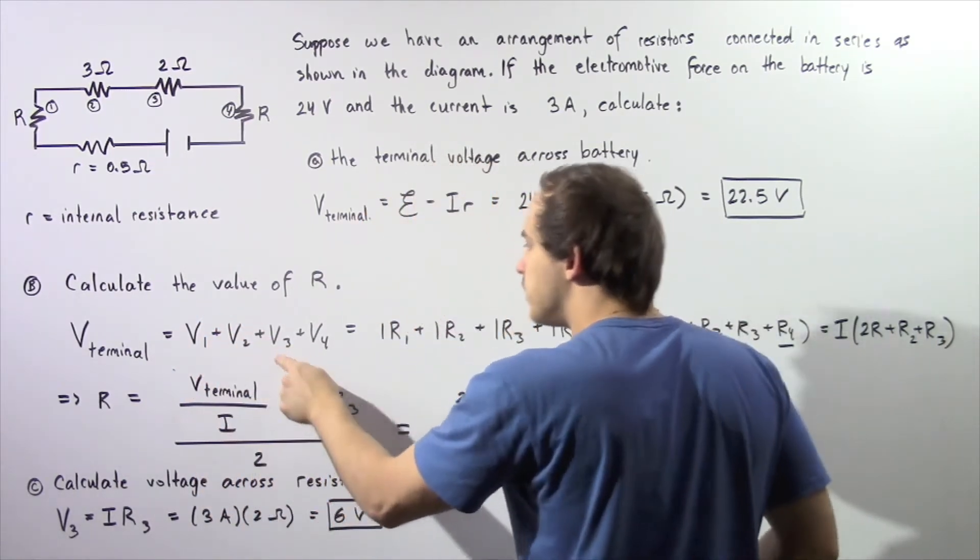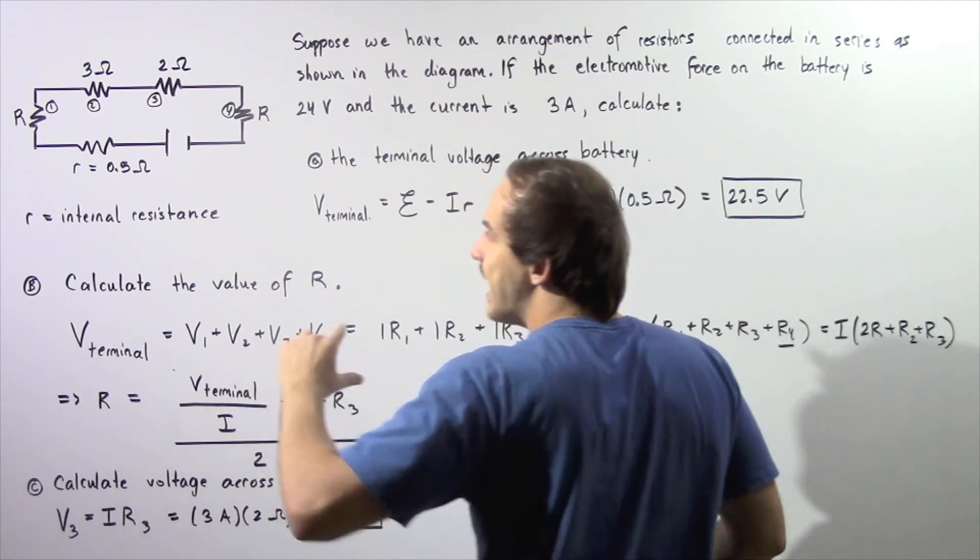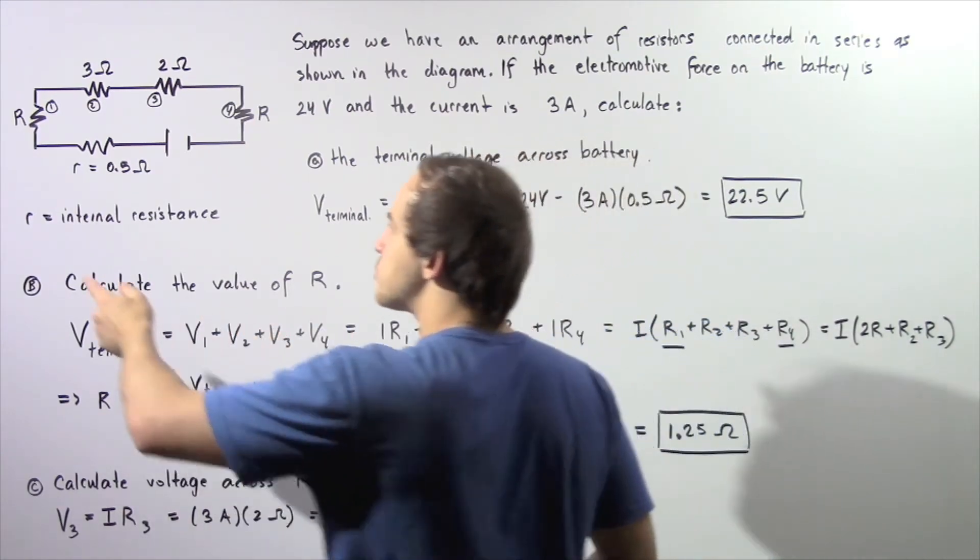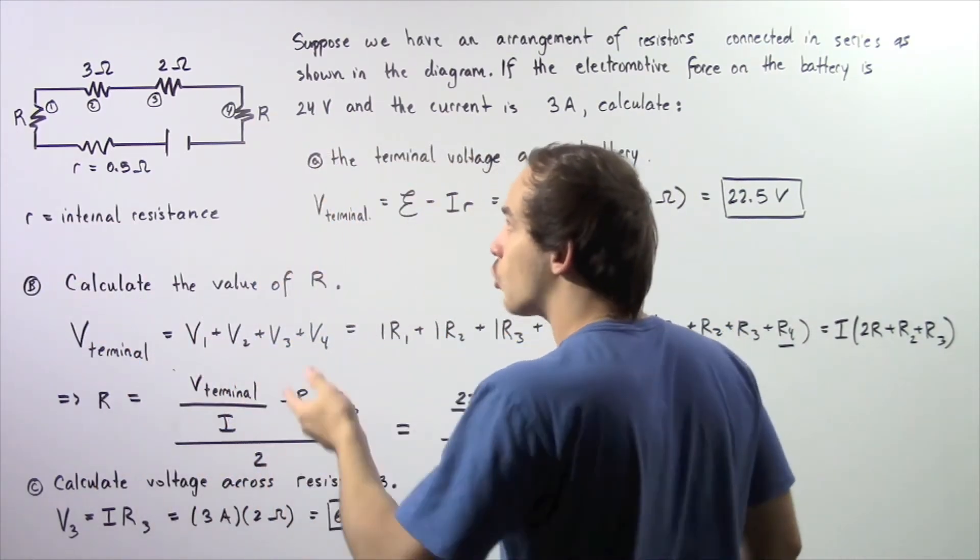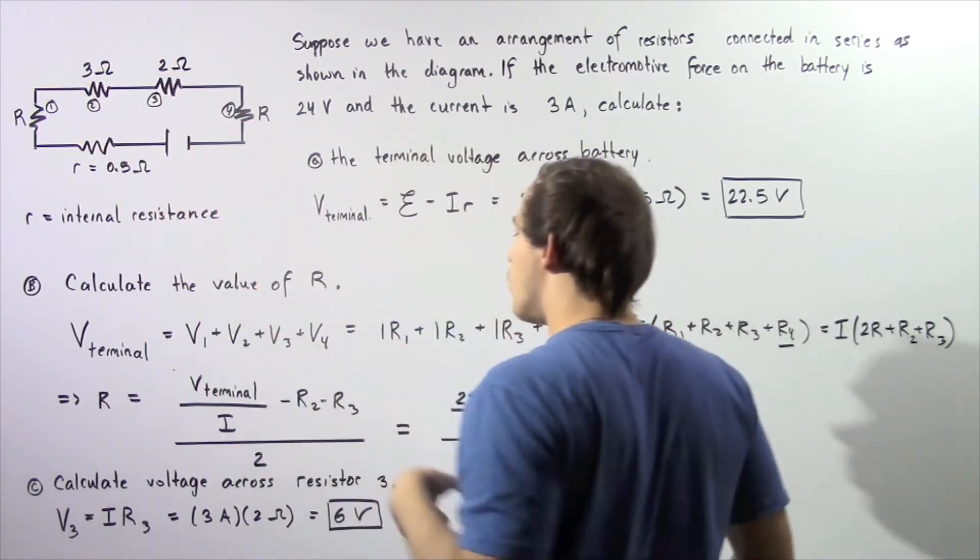We said that V-terminal on the battery is equal to V1 plus V2 plus V3 plus V4, where V1 is simply our voltage across resistor 1, V2 is the voltage across resistor 2, and so on.